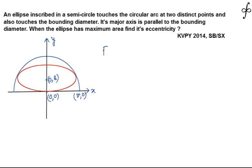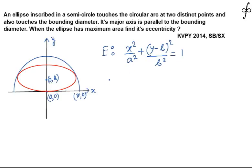The ellipse has its center at (0, B), so its equation is x²/A² + (y − B)²/B² = 1. Cross-multiplying, this gives B²x² + A²(y − B)² = A²B².